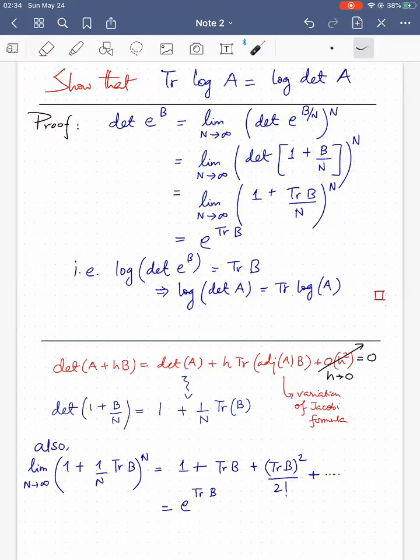This is because B by N is much less than 1. Now, from this step to this step, what we do is we have to use the expression that determinant of A plus h times B, for a small h, is given by determinant of A plus h times trace of adjoint of A times B, and order h squared terms. So if h is tending to 0, then we can drop this term.